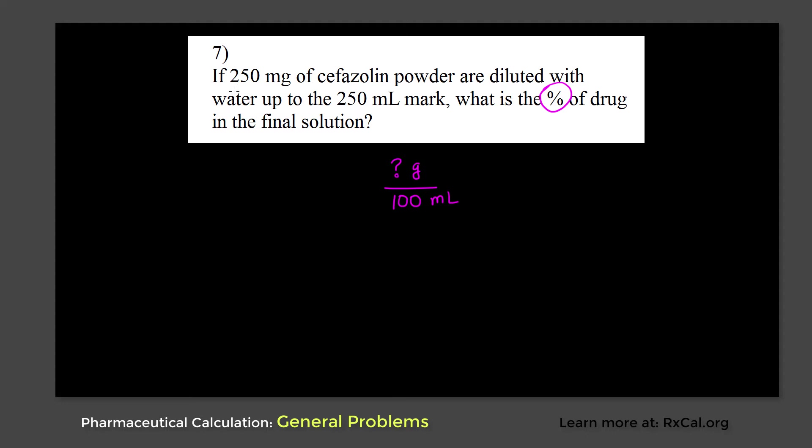We have 250 milligrams of the drug dissolved per 250 ml solution, so we're going to write it like this. We're going to use dimensional analysis, not any shortcut formula. So it's going to be 250 mg present in 250 ml of the solution.